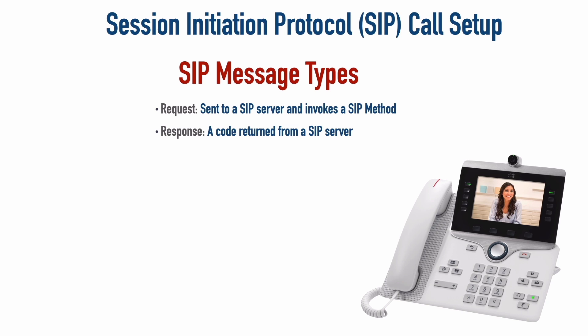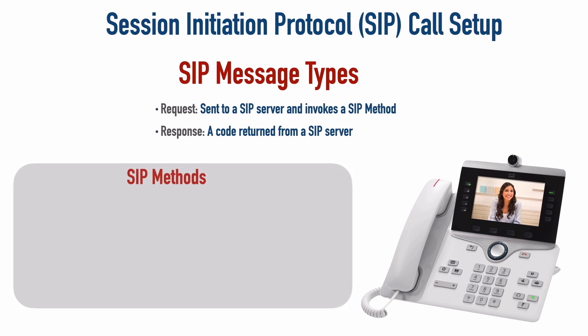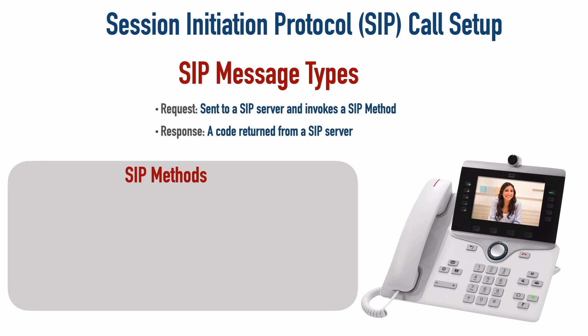A method or message type sent from a Cisco IP phone to the Communications Manager, and the response that phone gets back, is called a response code. Let's look at some of the different methods or SIP message types. When setting up a SIP call, we're really setting up a SIP session, and if we want somebody to join us in that session we invite them. The first method I want you to know about is the INVITE message — this is inviting another party, such as another Cisco IP phone, into a SIP session like a phone call.